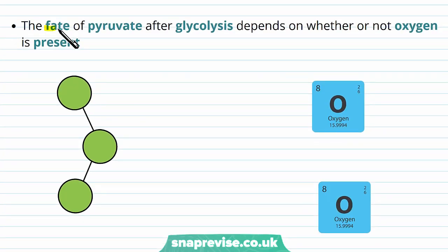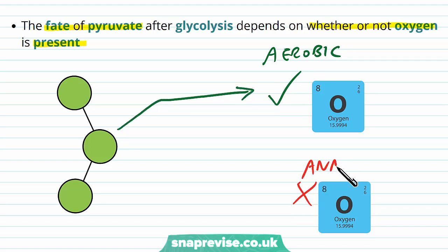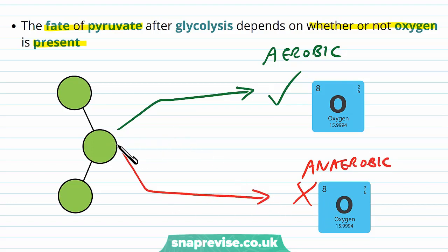The fate of pyruvate and the direction that it goes down depends on whether or not oxygen is present. If oxygen is present, we undergo aerobic respiration, and pyruvate goes down a particular path of reactions. If oxygen is absent and it's anaerobic, we still carry out respiration, but the pyruvate goes down different pathways. So the fate of the pyruvate depends on whether there's oxygen in the environment or not.